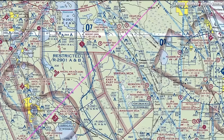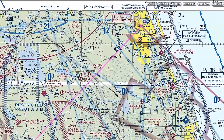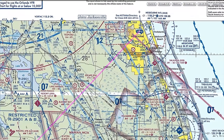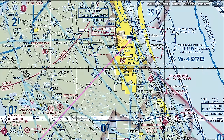We do need to make sure any restricted area is cold and that we're cleared to enter it, so we'll talk to Miami Center about that before busting through. Then we continue on course to Melbourne, which has a Class D tower.